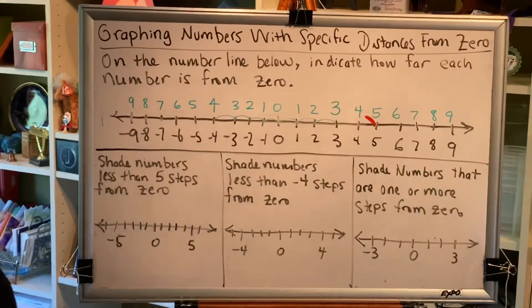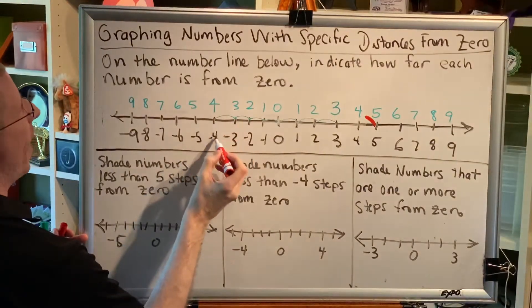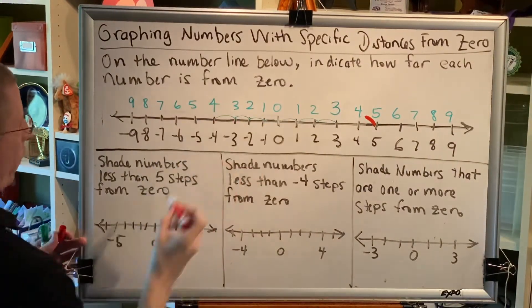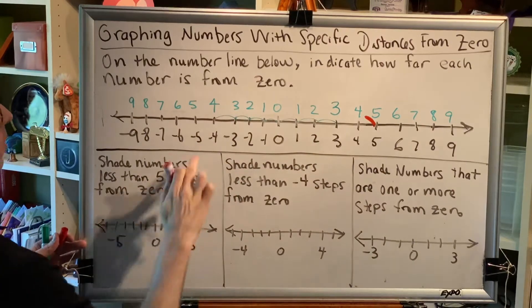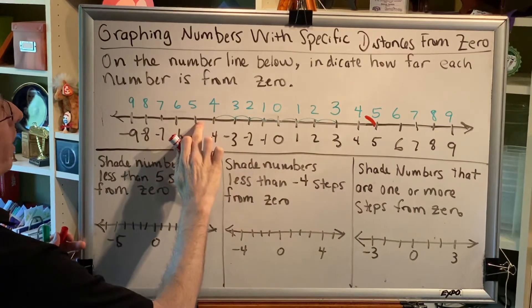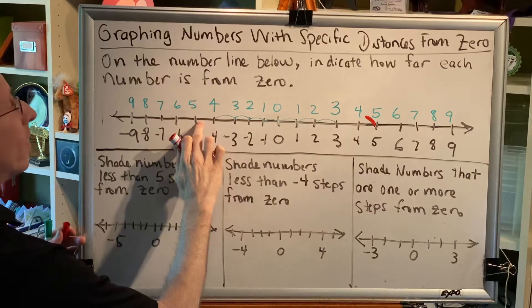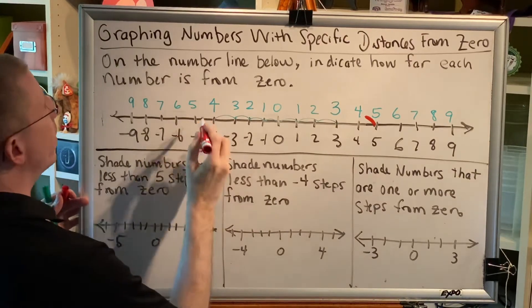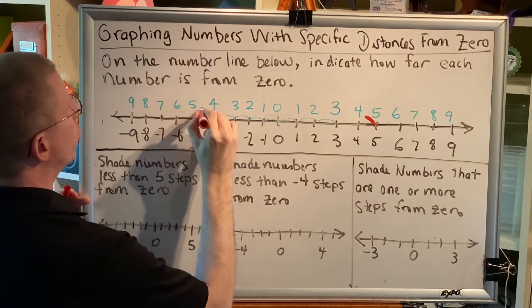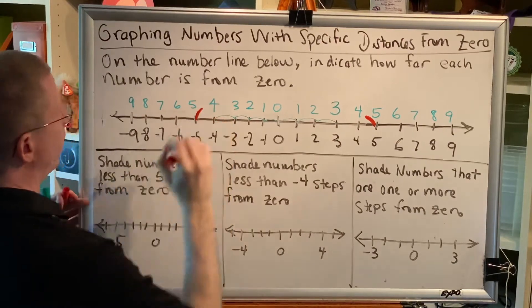The same thing is true on the other side. Negative 4 is 4 steps away from zero, and that's less than 5. The same thing is true of negative 4.9 and negative 4.99 and negative 4.9999. So the picture that we're looking for is going to look like this.